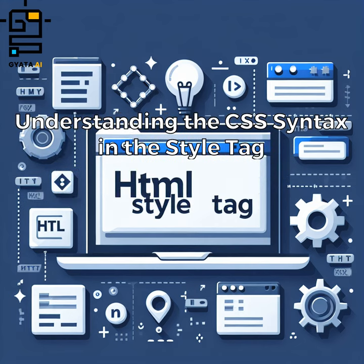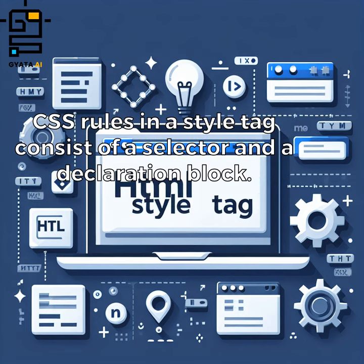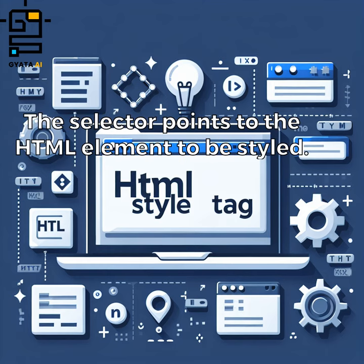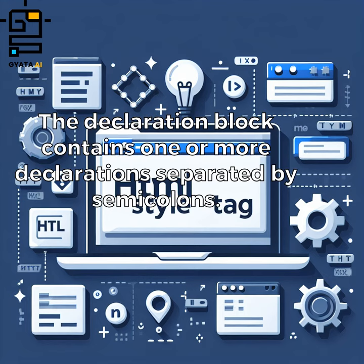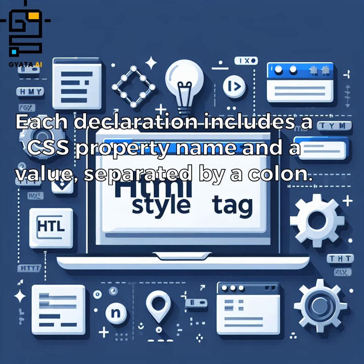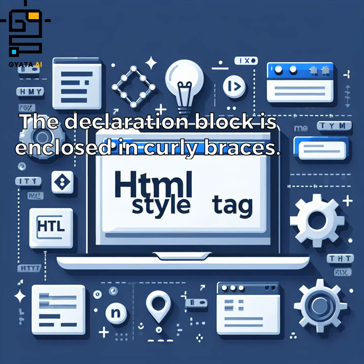Understanding the CSS syntax in the style tag: CSS rules in a style tag consist of a selector and a declaration block. The selector points to the HTML element to be styled. The declaration block contains one or more declarations separated by semicolons. Each declaration includes a CSS property name and a value separated by a colon. The declaration block is enclosed in curly braces.